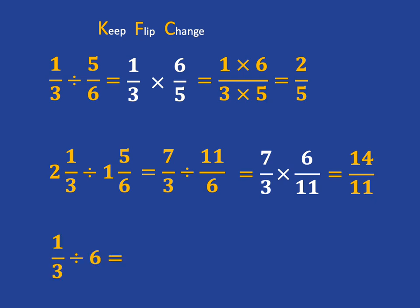And if we have something like this, one-third divide by six, no problem at all. You just have to remember, as we did for multiplication, that six is just six over one. And once you've got that, the process is the same.